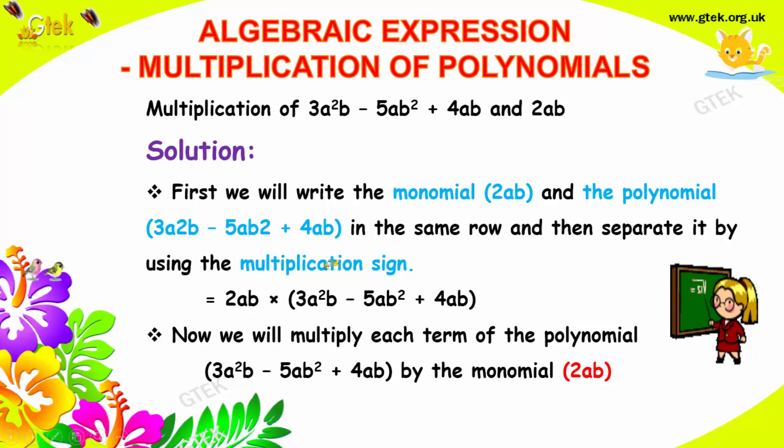Minus 2 into 5, a into a, b into b² plus 2 into 4, a into a, b into b. This is how we have to multiply. If we try to multiply each...